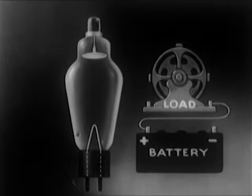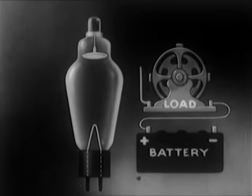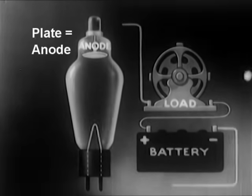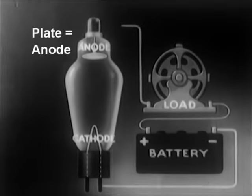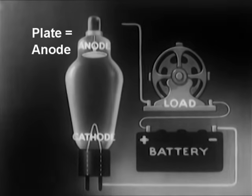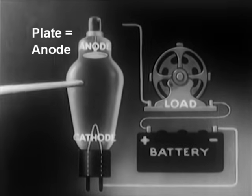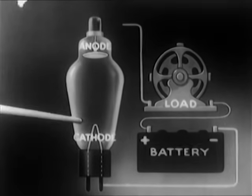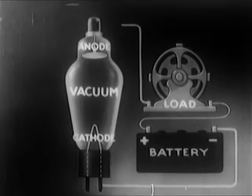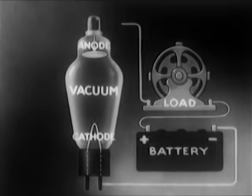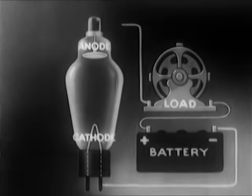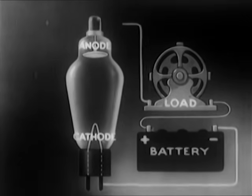One power lead comes to the anode, the other lead goes to the cathode. When this switch is open, the contacts are insulated from each other by a vacuum, or by some inert gas inserted into an evacuated tube under low pressure.